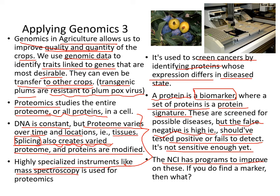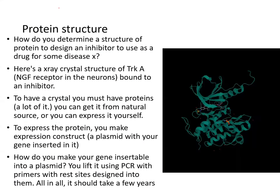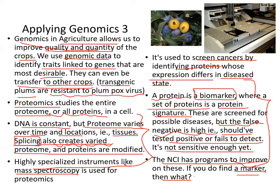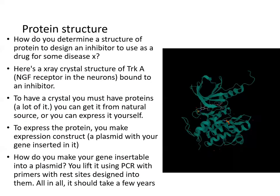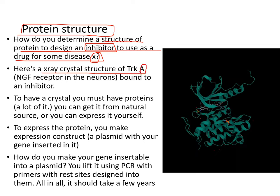Programs at the NCI are working to improve these methods. If you find a marker, then you have a marker for a disease, and you can make lifestyle choices. Another area of biotech that is interesting is determining protein structures — how do you determine the structure of a protein to design an inhibitor as a drug for some disease? Here's an X-ray crystal structure of TrkA, an NGF receptor on neurons, bound to an inhibitor shown here.